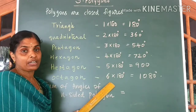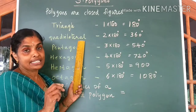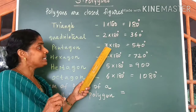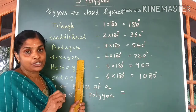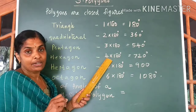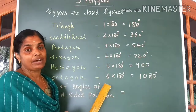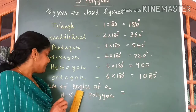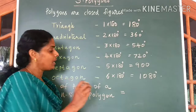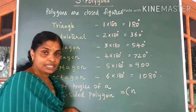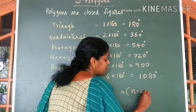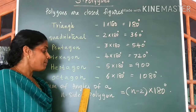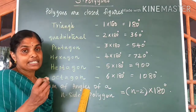From all this we can conclude that a four-sided figure is divided into 2 triangles, a five-sided figure into 5 minus 2 = 3 triangles, and a hexagon into 6 minus 2 = 4 triangles. So any polygon can be divided into (number of sides minus 2) triangles. Therefore, the sum of angles of an n-sided polygon equals (n minus 2) into 180 degrees.